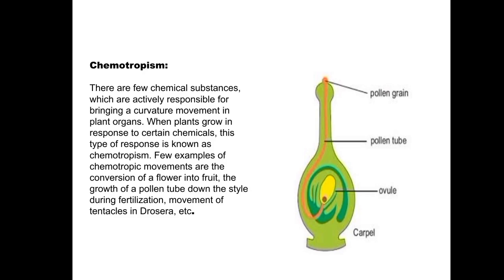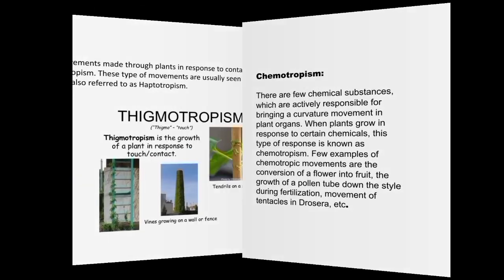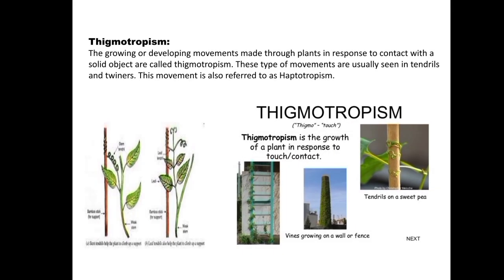Thigmotropism, also known as haptotropism, is a growth movement regulated by touch. This is usually found in twining plants and tendrils. The movements occur due to contact with foreign bodies, and it is most conspicuous in tendrils which coil around a support to help the plant climb.